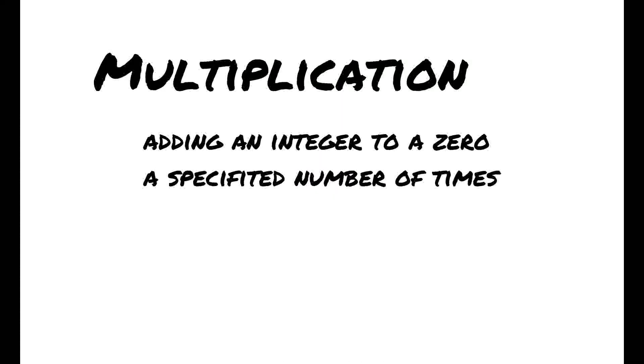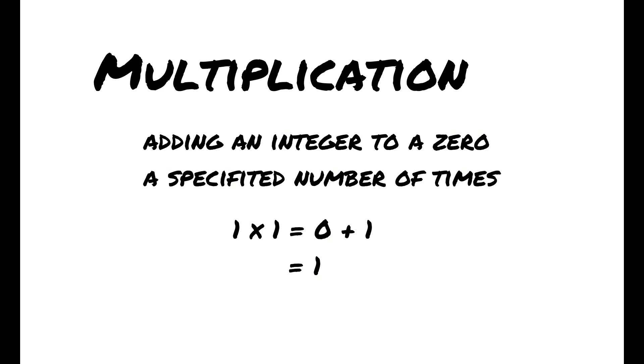Let us ask: what is multiplication? From definition, multiplication is a mathematical operation that adds an integer to 0 a specified number of times. Therefore, 1 times 1 means 0 plus 1, which equals 1. But it sounds too abstract for kids.